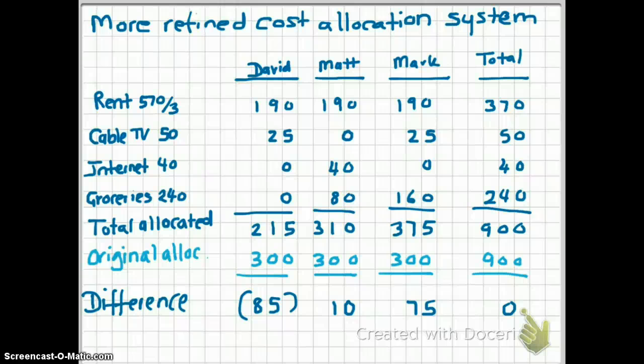Activity-based costing is a similar concept where we allocate resources to products based on how much they use those resources, and that's what we'll talk about next.